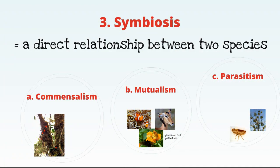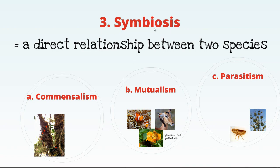The last category in community ecology is symbiosis — a direct relationship between two species. Within symbiosis there are three main categories: commensalism, mutualism, and parasitism. A common mistake is assuming symbiosis just means mutualism, but symbiosis is the umbrella concept of two species having a close relationship, which could be any one of these three types.